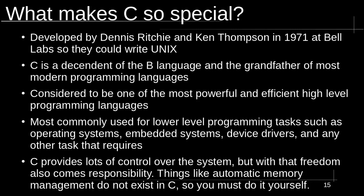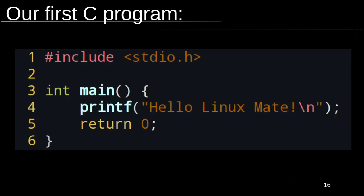So what does a C program look like? This is the code for the simplest C program that actually gives you some output — basically the traditional Hello World program. Let's analyze this code line by line. Line 1 is an include statement, starting with a pound sign — what we call a preprocessor directive. The pound include statement allows us to bring in other code from other files and use it within our project. In this case, we're including the stdio.h file, which stands for standard input and output, giving us access to the command we use later to print text to the screen.